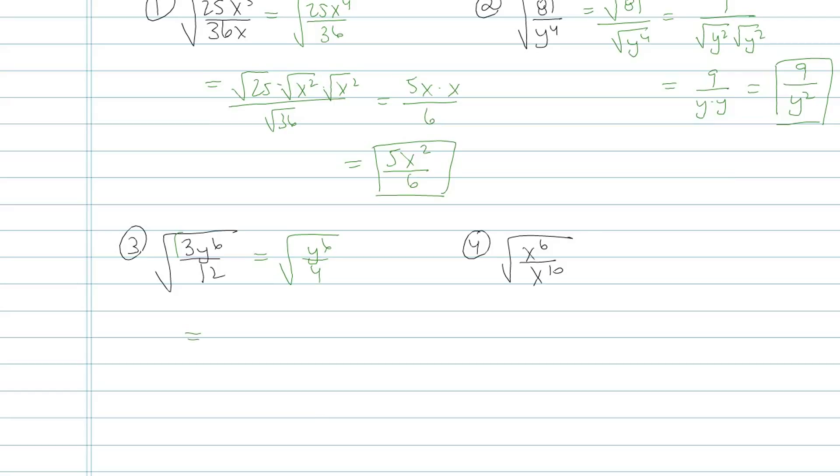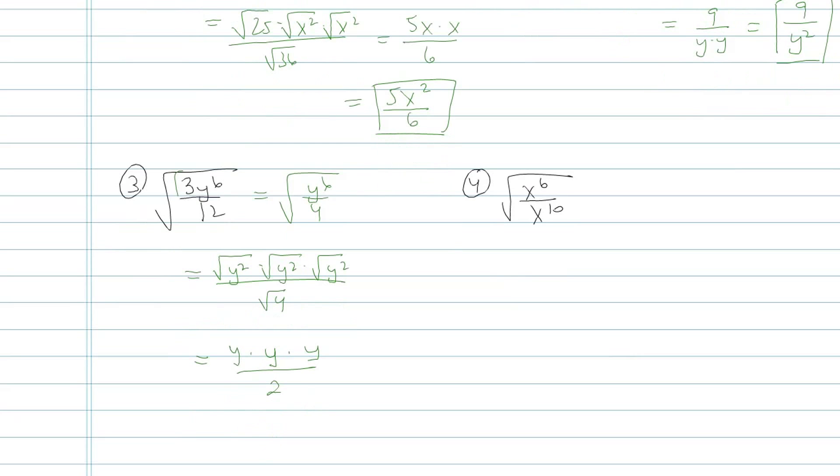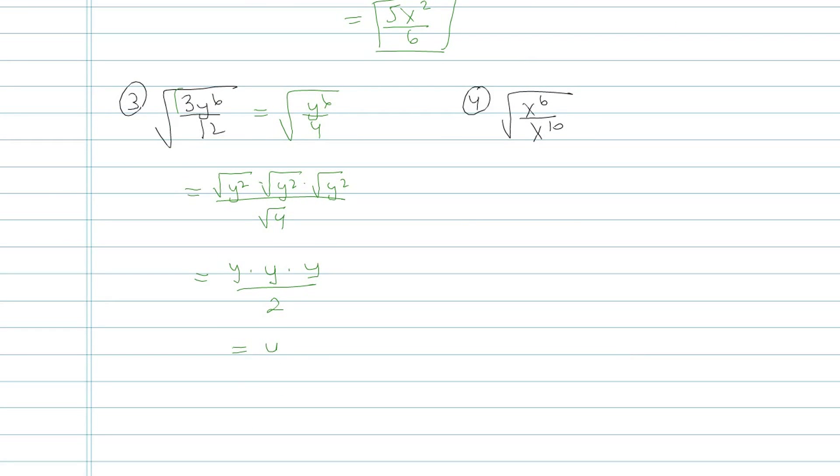And square root of y to the sixth, I'll deal with that as y squared times y squared times y squared on top of square root of 4. Okay, square root of y squared is y, again y, again y, all over 2. So my final result would be y to the third over 2.